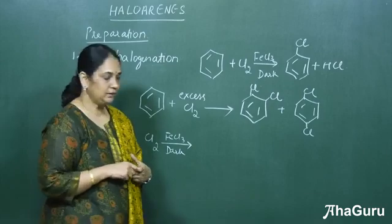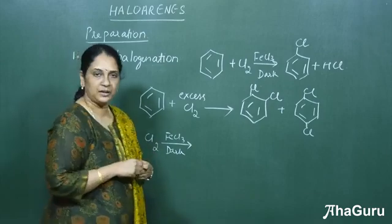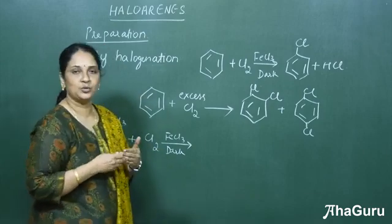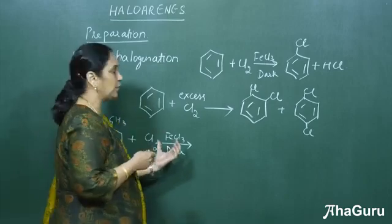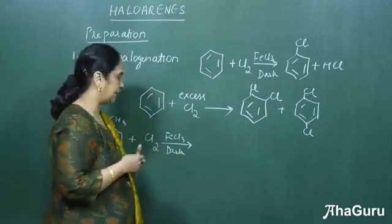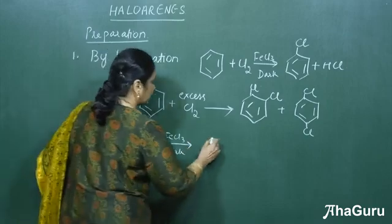Next we can also take toluene, halogenate it with chlorine. As I said, we can also do bromination, but then we have to take FeBr3 as the catalyst. Dark conditions have to be used.